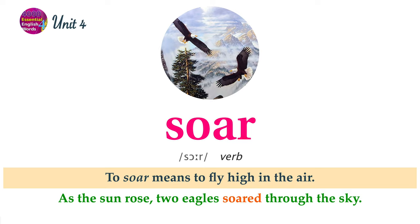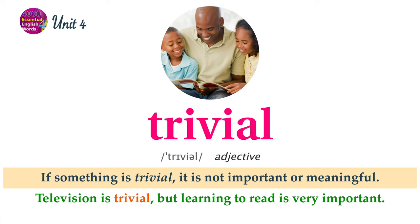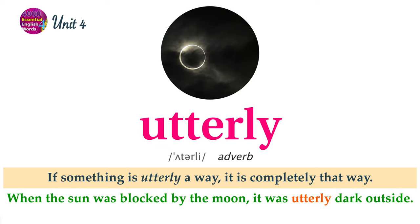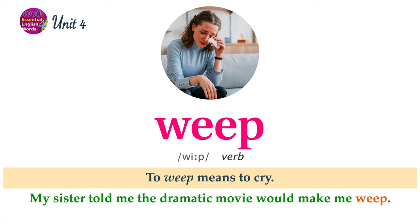To soar means to fly high in the air. As the sun rose, two eagles soared through the sky. If something is trivial, it is not important or meaningful. Television is trivial, but learning to read is very important. If something is typical, it is normal for a certain type of thing. Barking is typical behavior for dogs. If something is utterly a certain way, it is completely that way. When the sun was blocked by the moon, it was utterly dark outside. To weep means to cry. My sister told me the dramatic movie would make me weep.